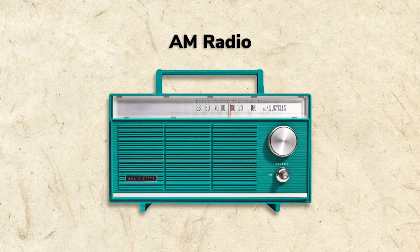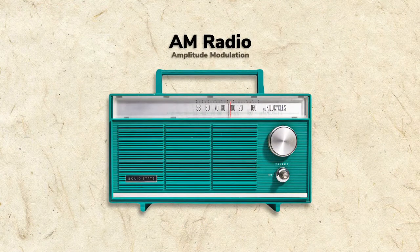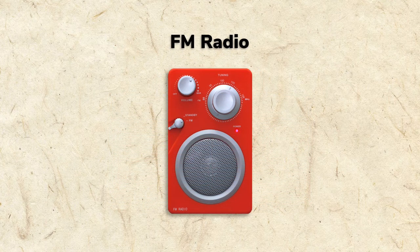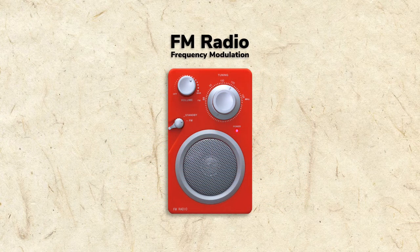Radios like our antique Emerson are called AM radios because they use amplitude modulation. FM radios work in a similar fashion, but instead use frequency modulation.